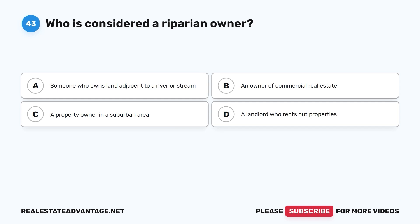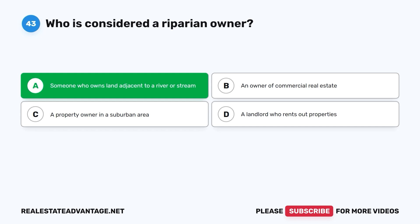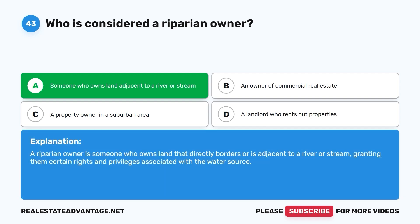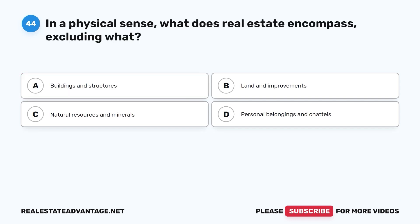Question 43: Who is considered a riparian owner? A. Someone who owns land adjacent to a river or stream. B. An owner of commercial real estate. C. A property owner in a suburban area. D. A landlord who rents out properties. The correct answer is A. A riparian owner is someone who owns land that directly borders or is adjacent to a river or stream, granting them certain rights and privileges associated with the water source.